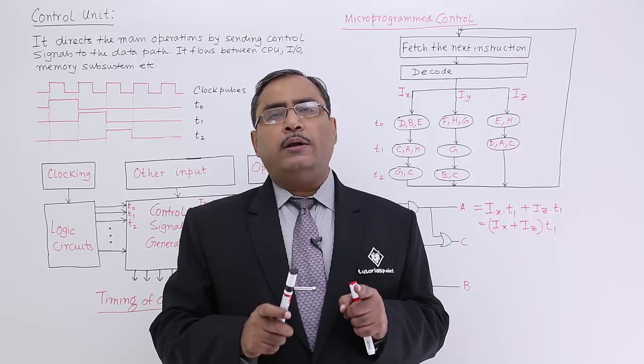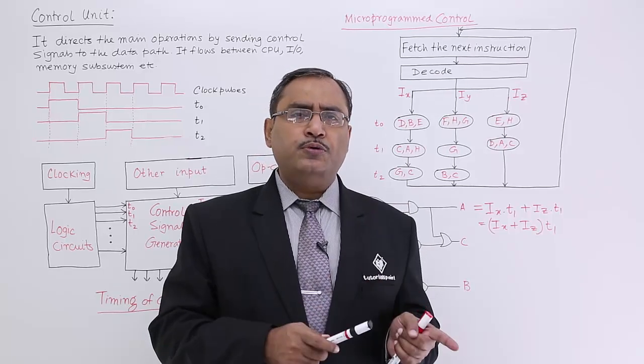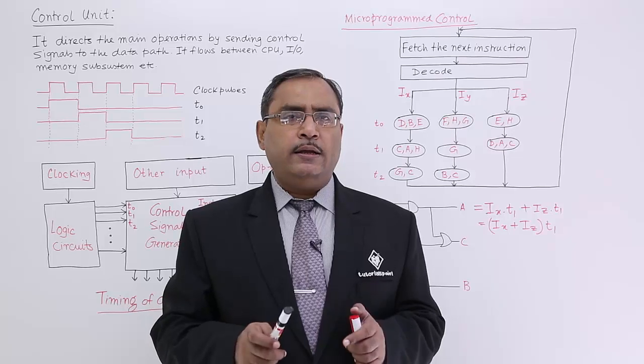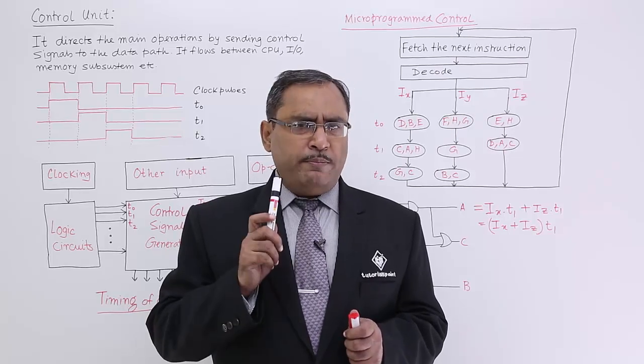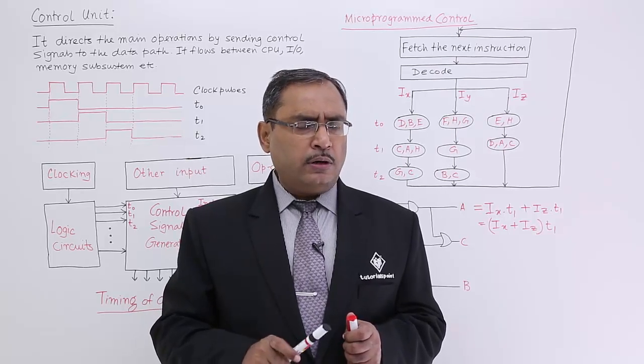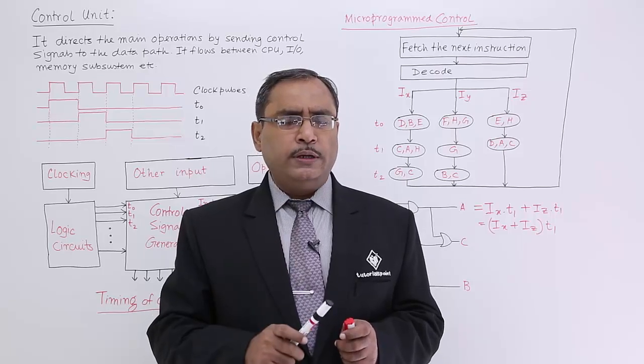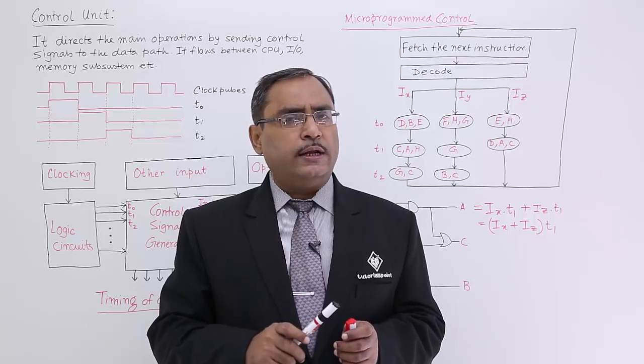Should I make one I.O. port for the input or for the output? That will be decided by the control signal. Should I make this data path enabled or disabled? That also will get decided by the control signal.